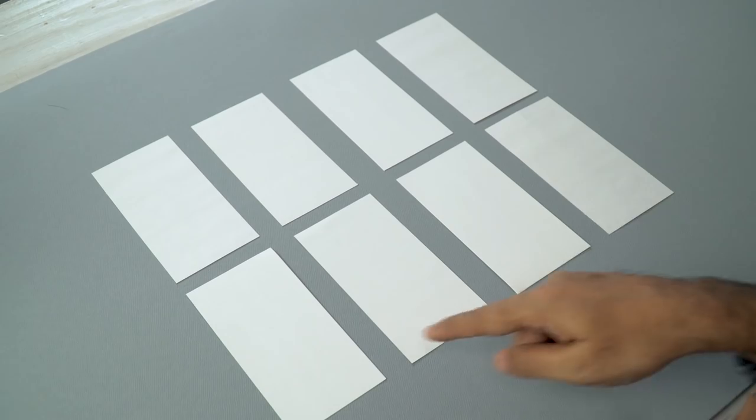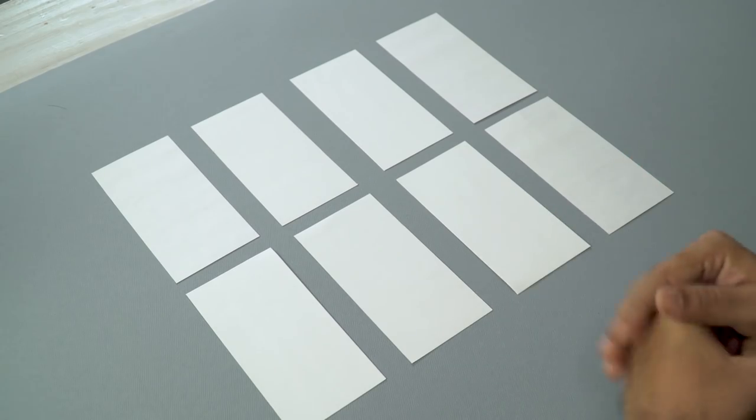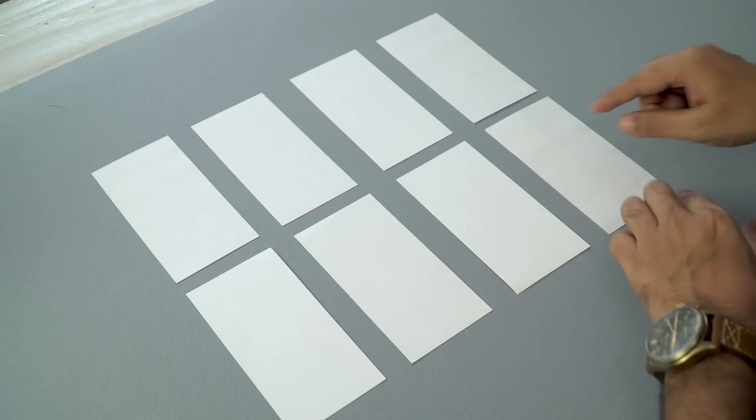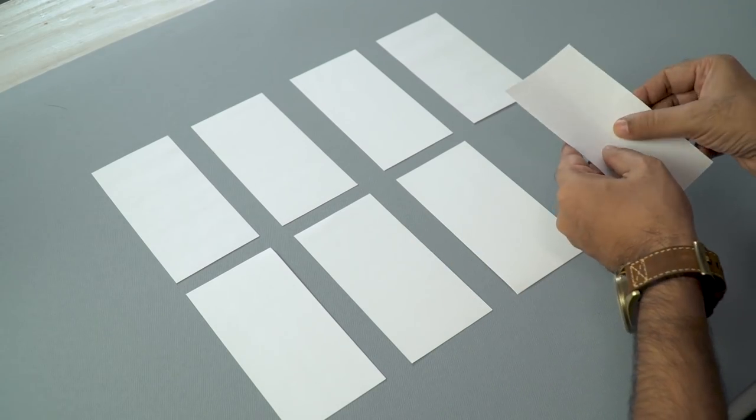So there you go, we have eight 3 by 6 inches strips of paper and now I'll show you how you need to fold them to make our magical never-ending card. So we'll take one and we'll fold it in half.